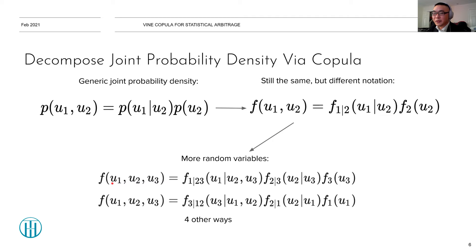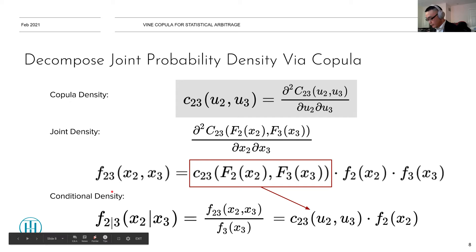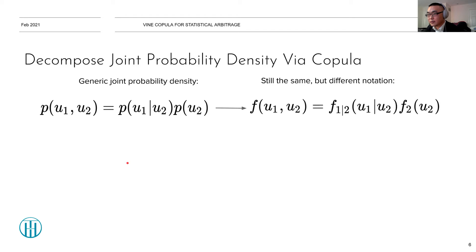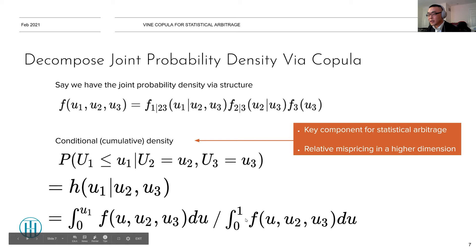If we make it slightly more complicated with three random variables instead of two, you can decompose the joint density in several different ways. You just apply Bayes' rule again and again to get these decompositions. We care about this because once we have the joint probability density from the structure, we can compute the conditional cumulative density by integrating the pointwise density and normalizing by dividing over the full integration.